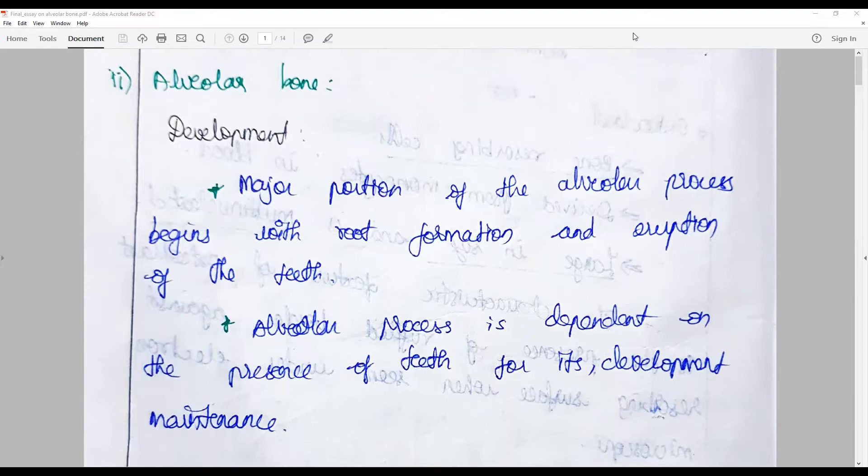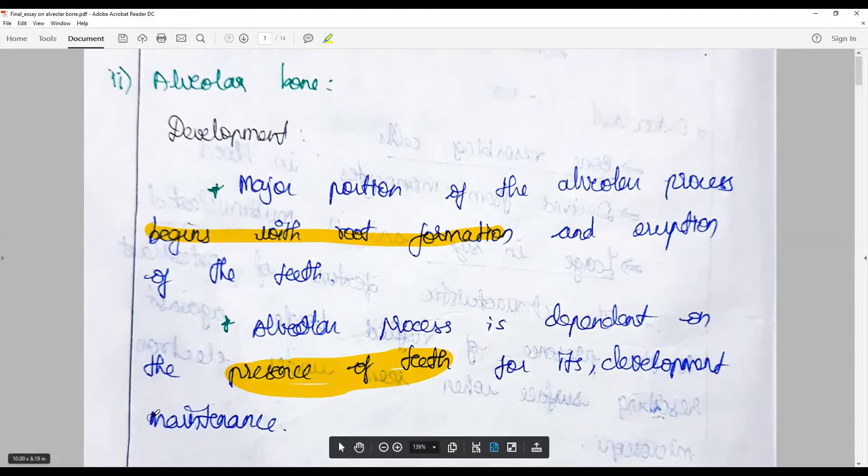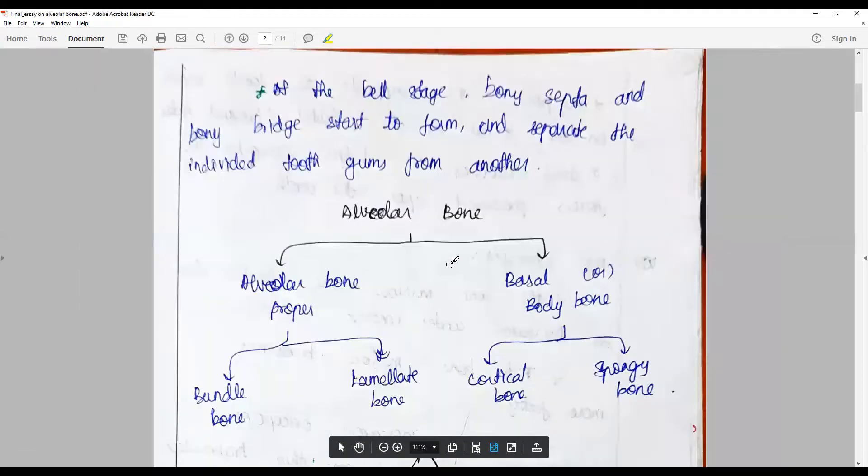The major portion of alveolar process begins with the root formation. The development begins with the root formation and eruption of the teeth. It is dependent on the presence of the teeth, and the function is what keeps the alveolar bone high and maintained.